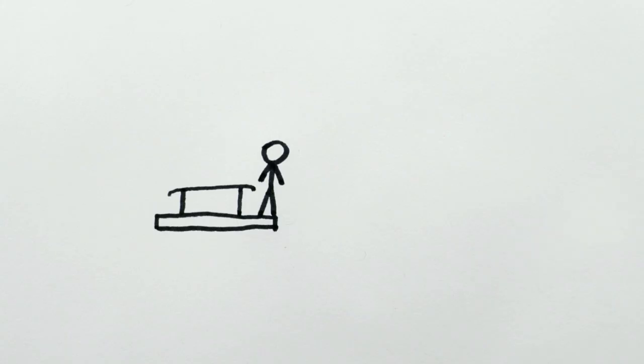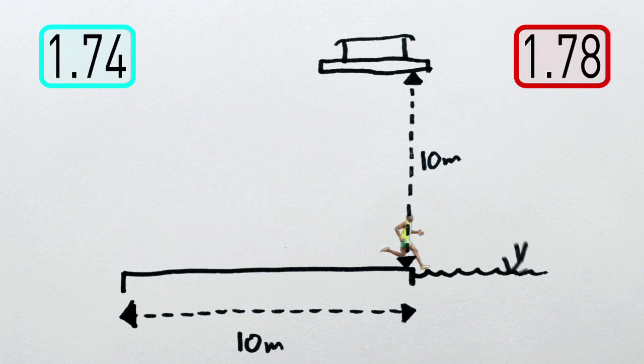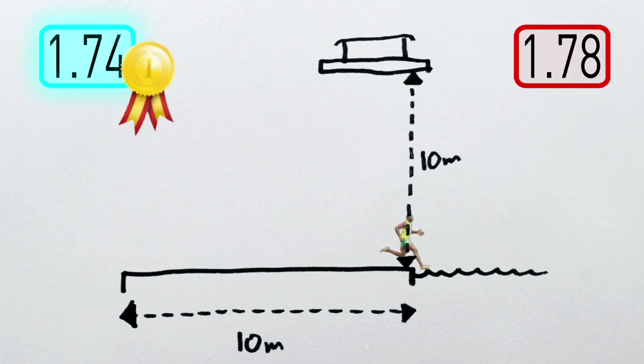But of course, an Olympic diver is not a rock, and in particular, they jump upwards off the platform. This means they'll be in the air for an additional third of a second, or a total of about 1.78 seconds before they hit the water. So it's actually a close race, and Bolt wins the photo finish.